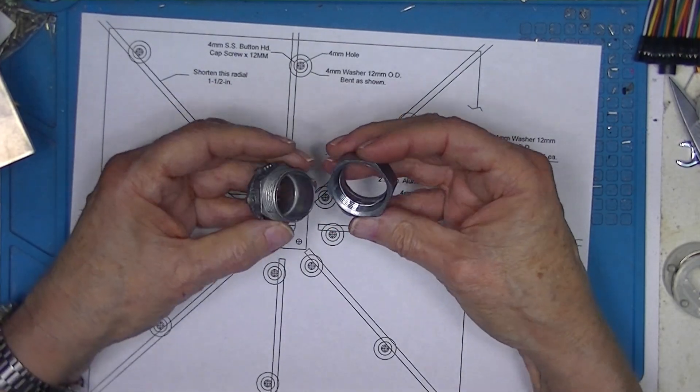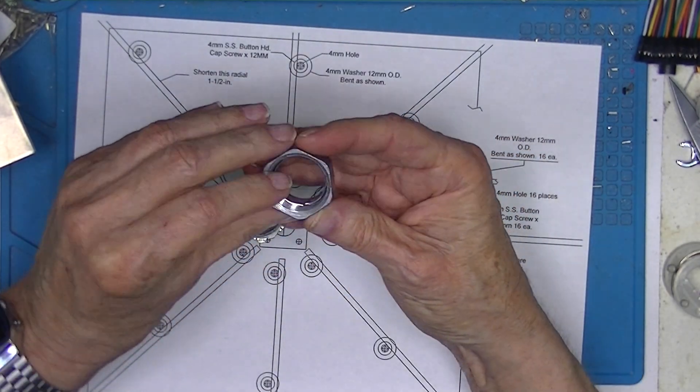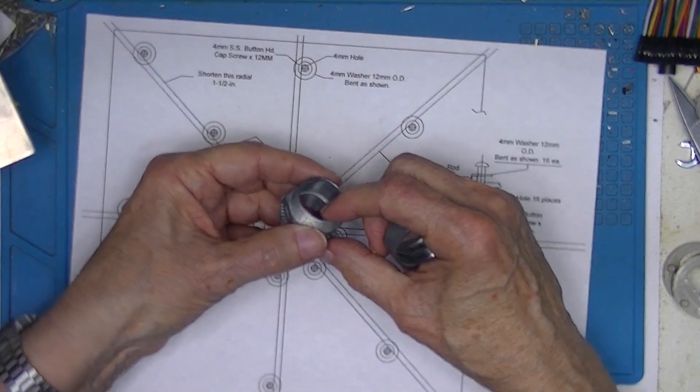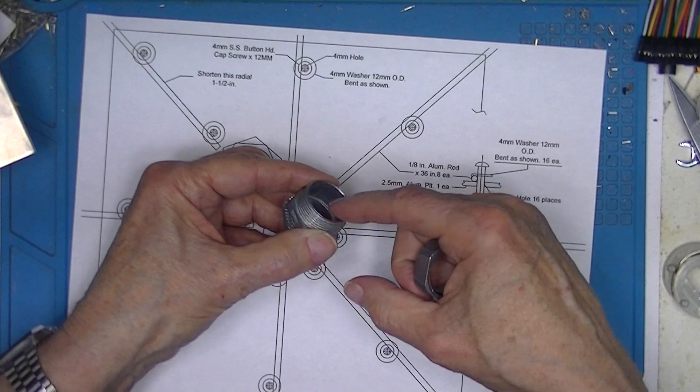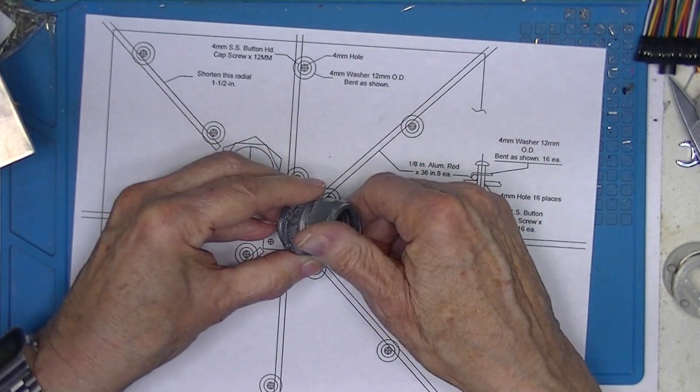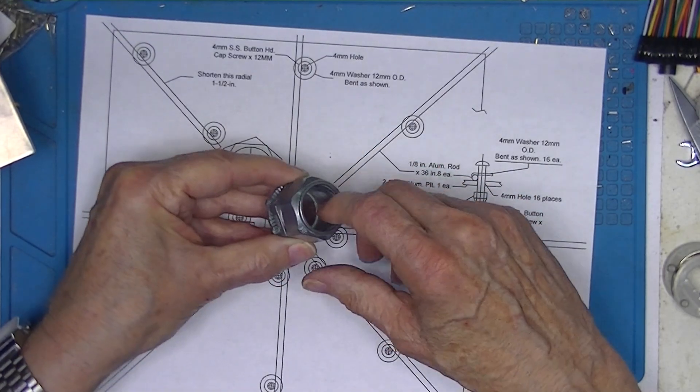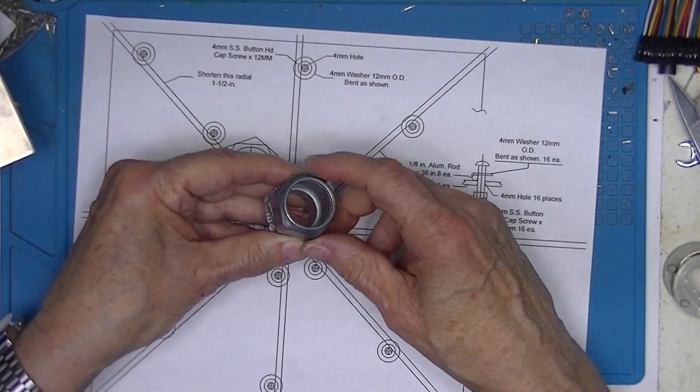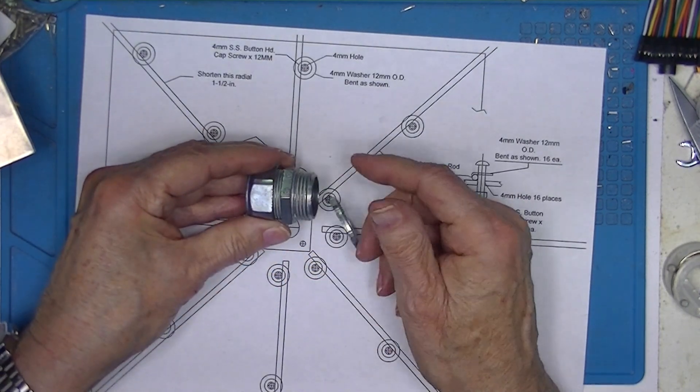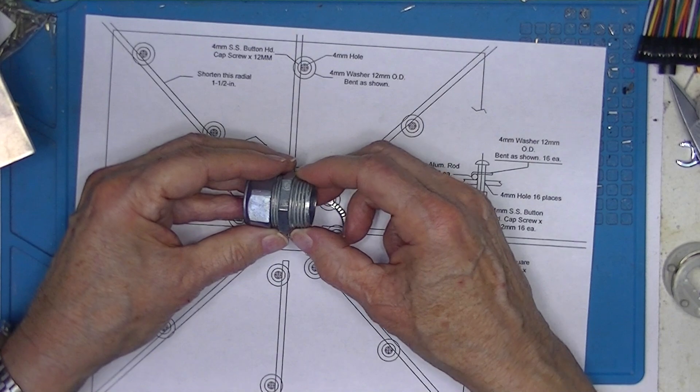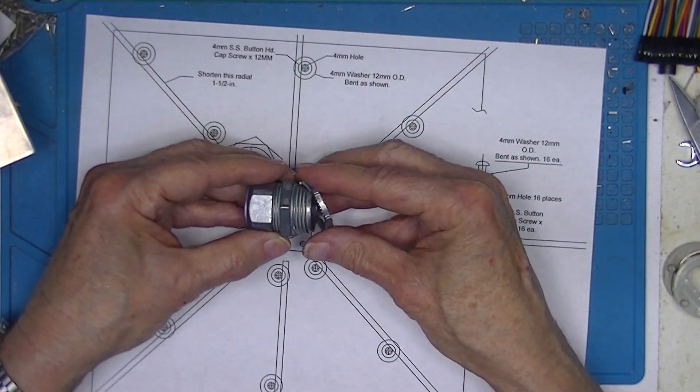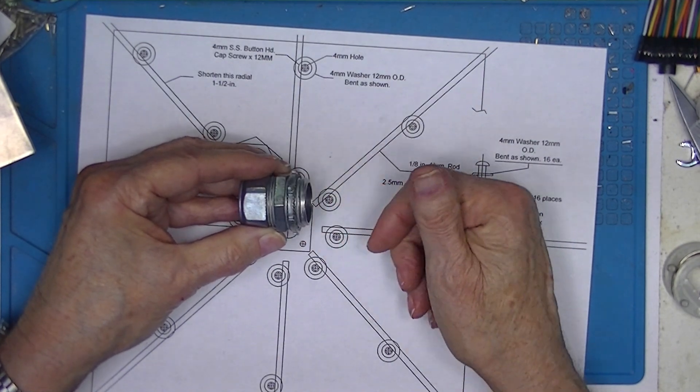The compression connector has this little collapsible ring in it here that tightens against this slightly tapered surface and securely clamps the conduit around its circumference when you tighten this up. This is designed to be passed through a hole in an electrical box, secured on the inside with this nut.